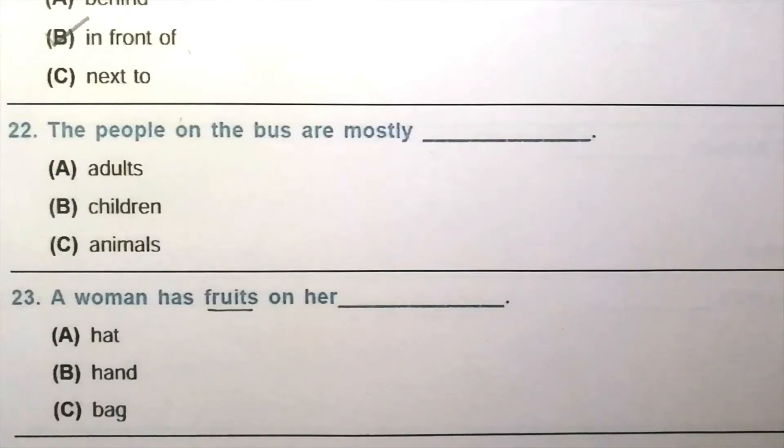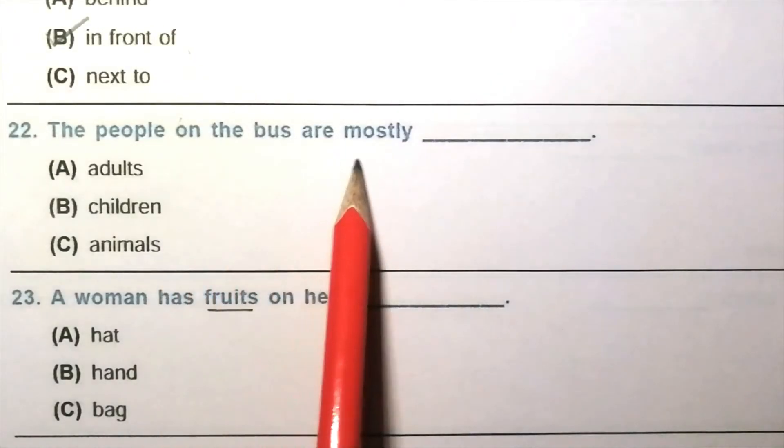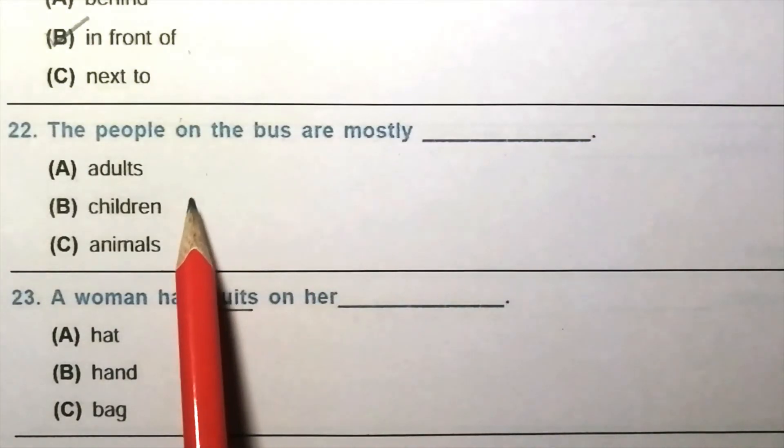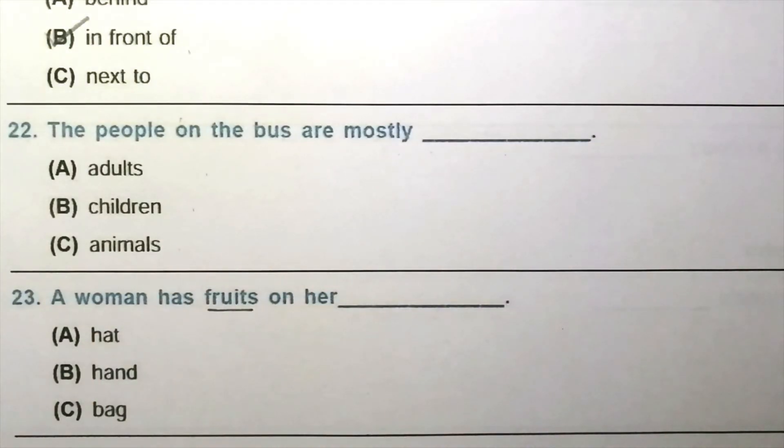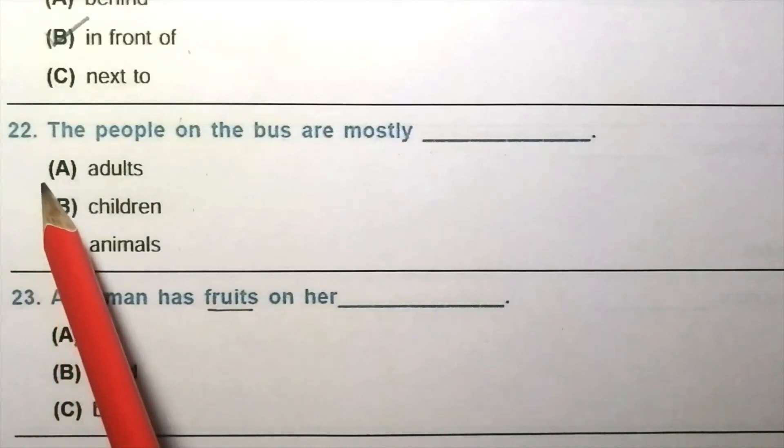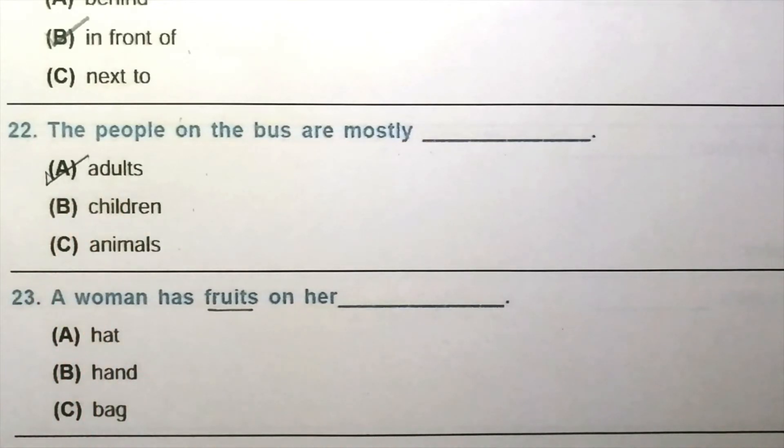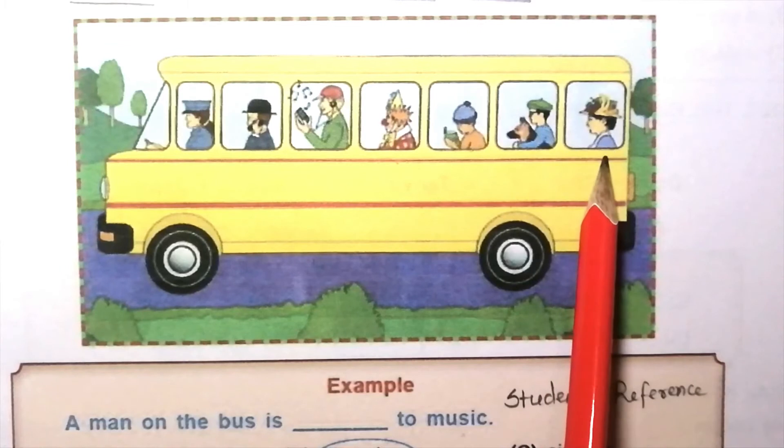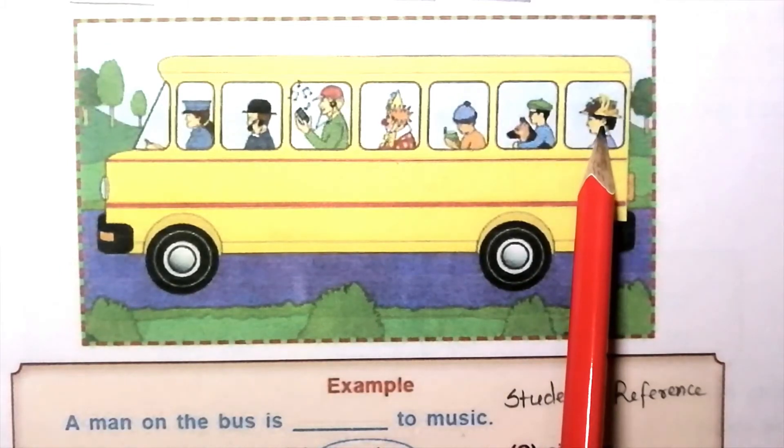Question 22: The people on the bus are mostly blank. Adults, children, animals. The answer is A, adults. Question 23: A woman has fruits on her blank. Hat, hand, bag. The answer is A, hat. Look at this woman and see her hat.